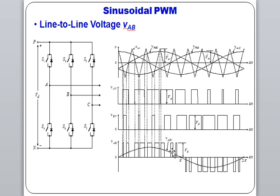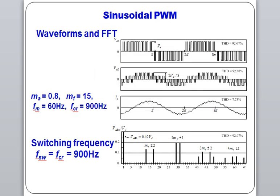The line voltage depends on the number of pulses in each half cycle, which depends on the number of switches and the frequency of the carrier signal. If we do a Fast Fourier Transform analysis, in a particular case the total harmonic distortion is approximately 92% in the voltage, but in current it is only 7%, so it is much less.